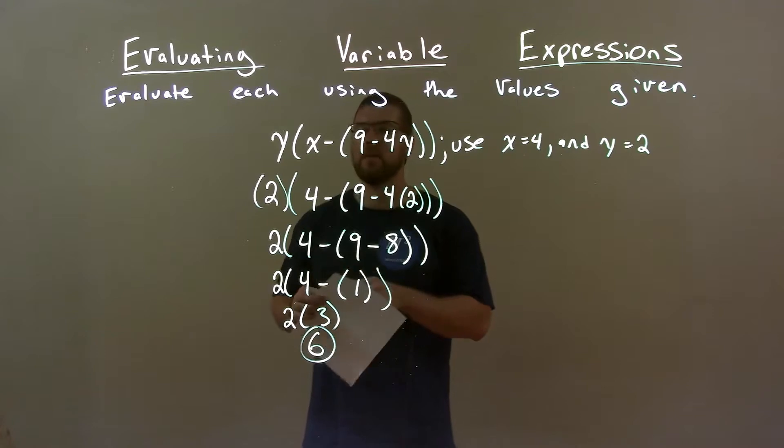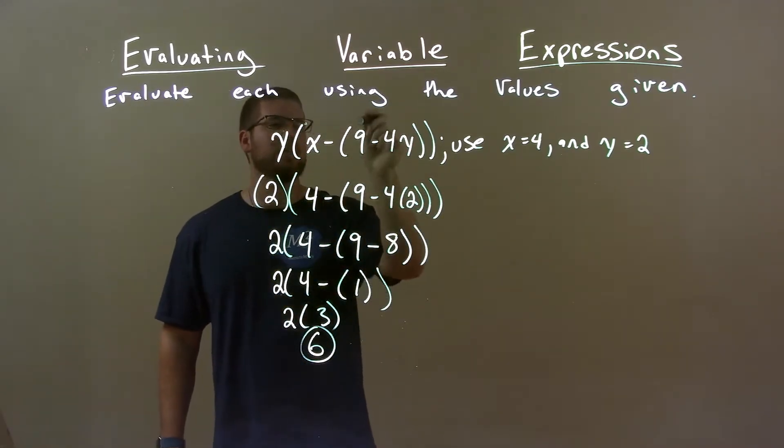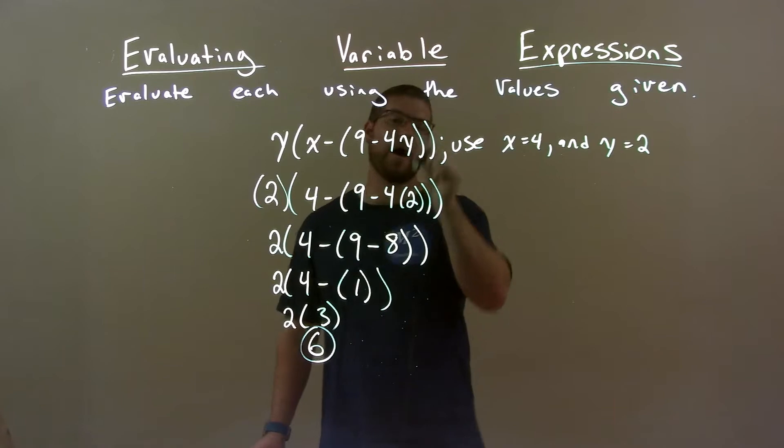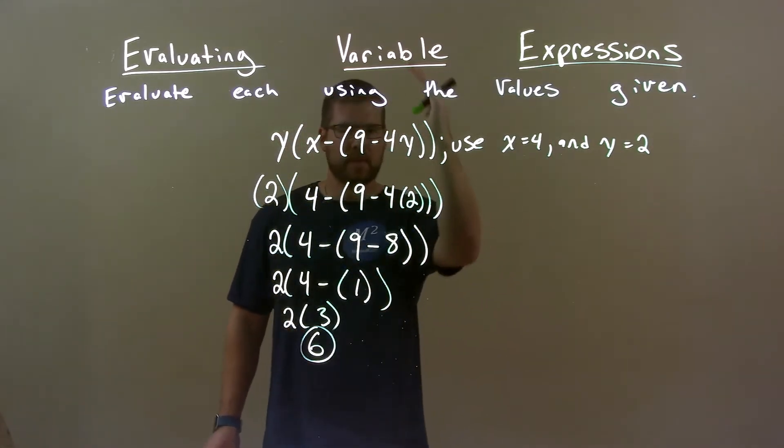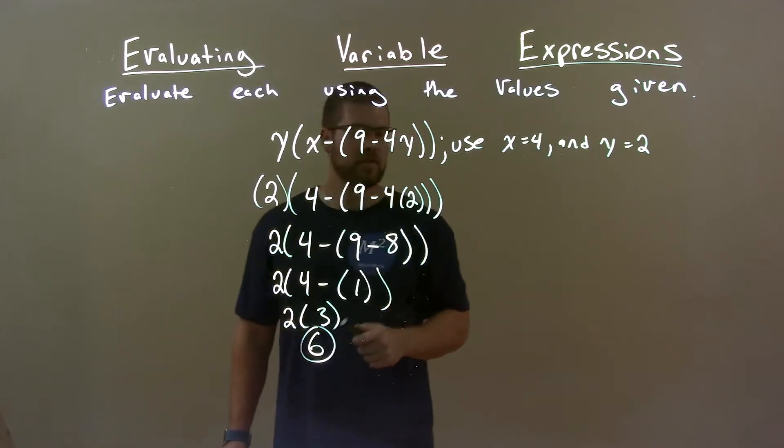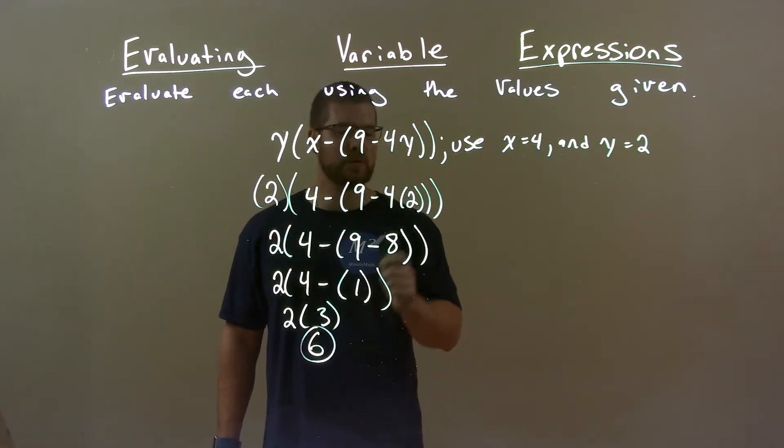Quick recap, we're given y times x minus 9 minus 4 minus 4y. Substituting 4 for x, y for 2. Keep your parentheses in line. First step, 4 times 2, which is 8.